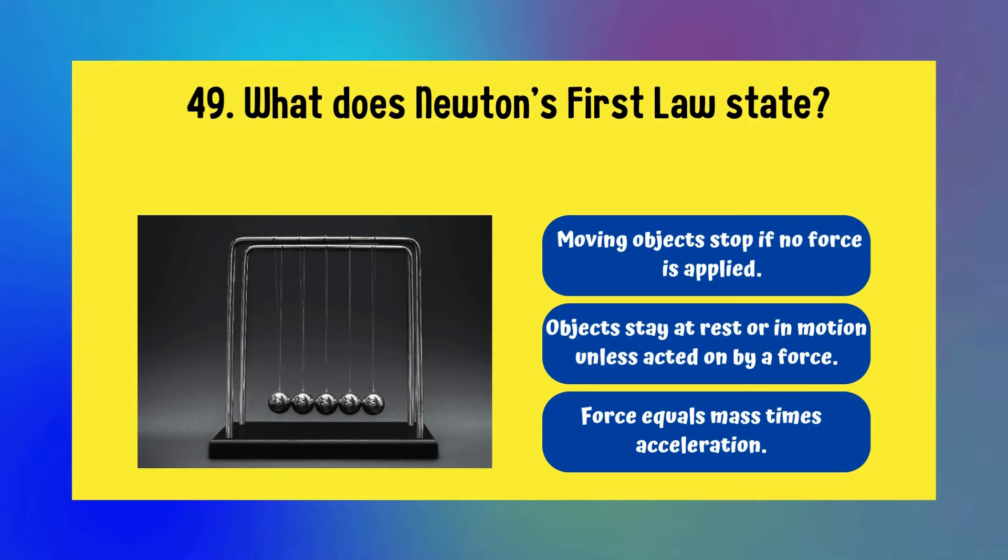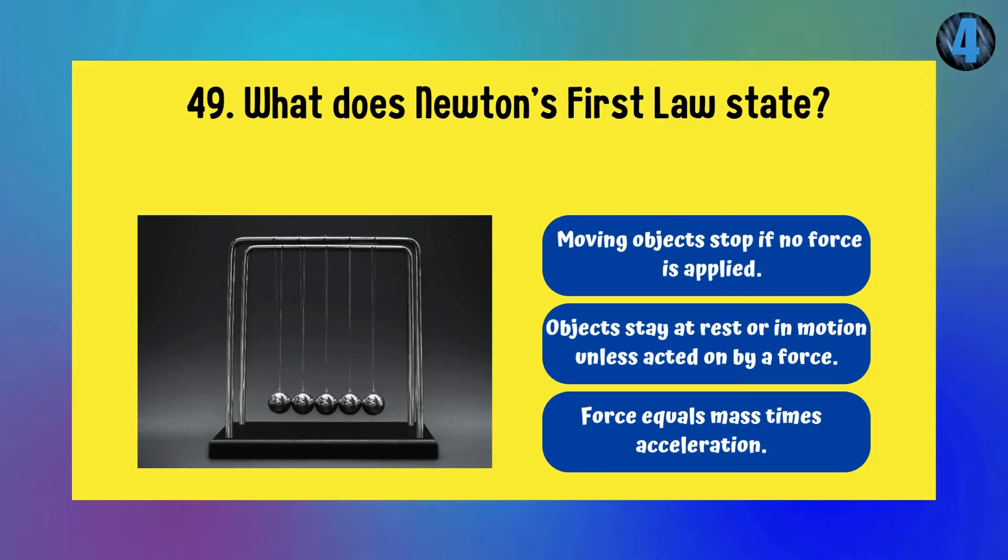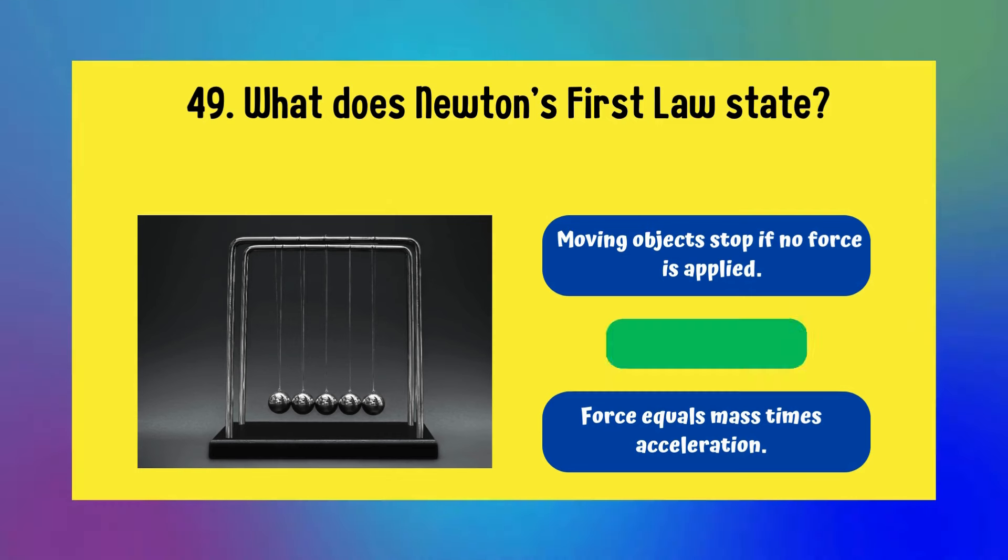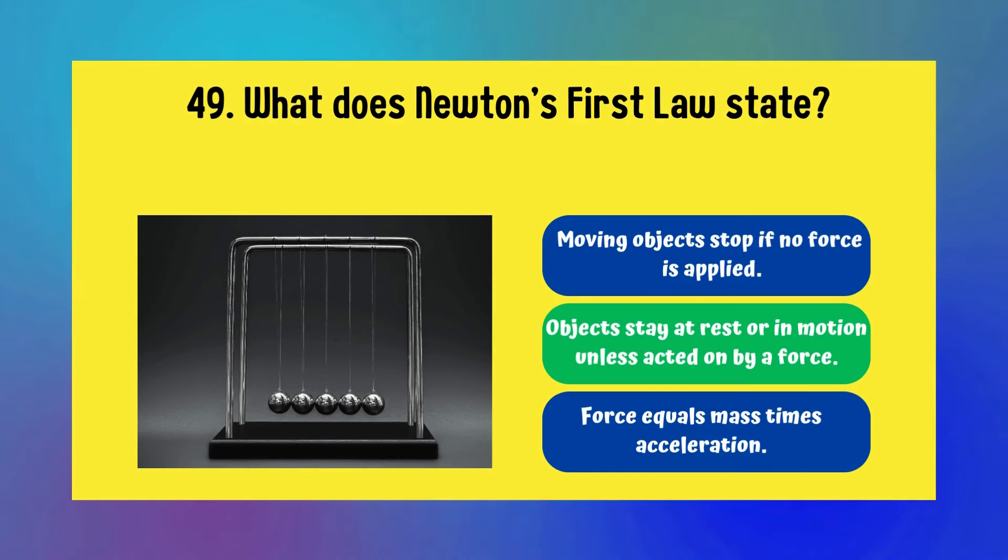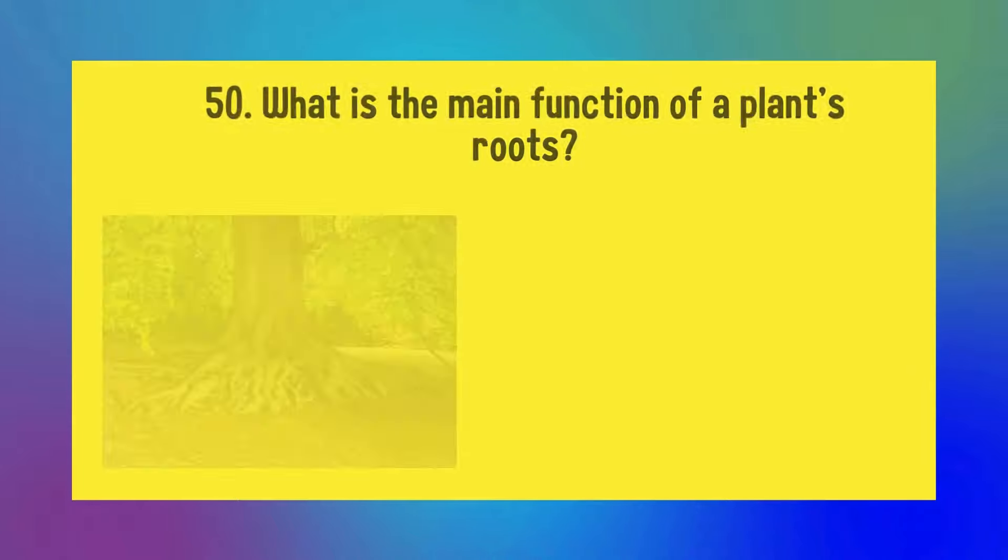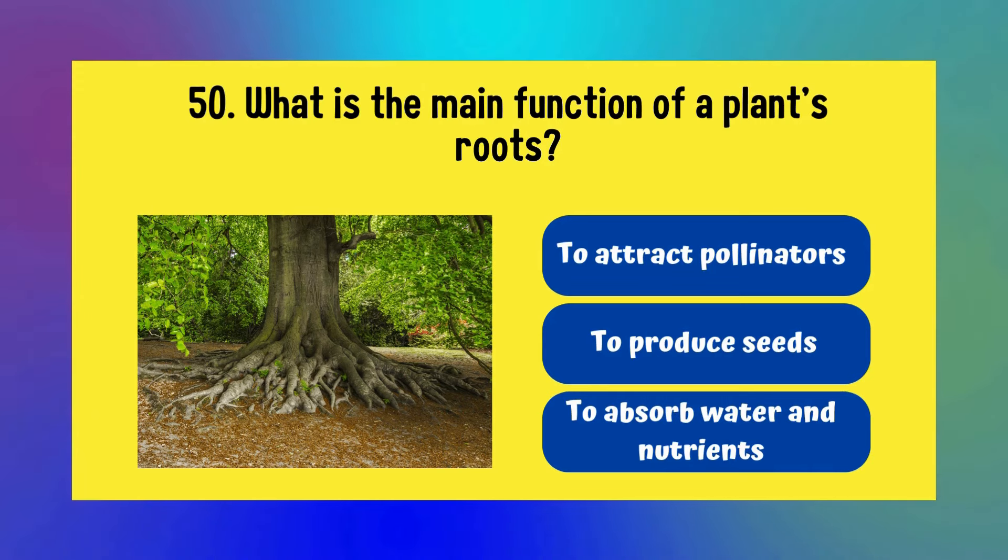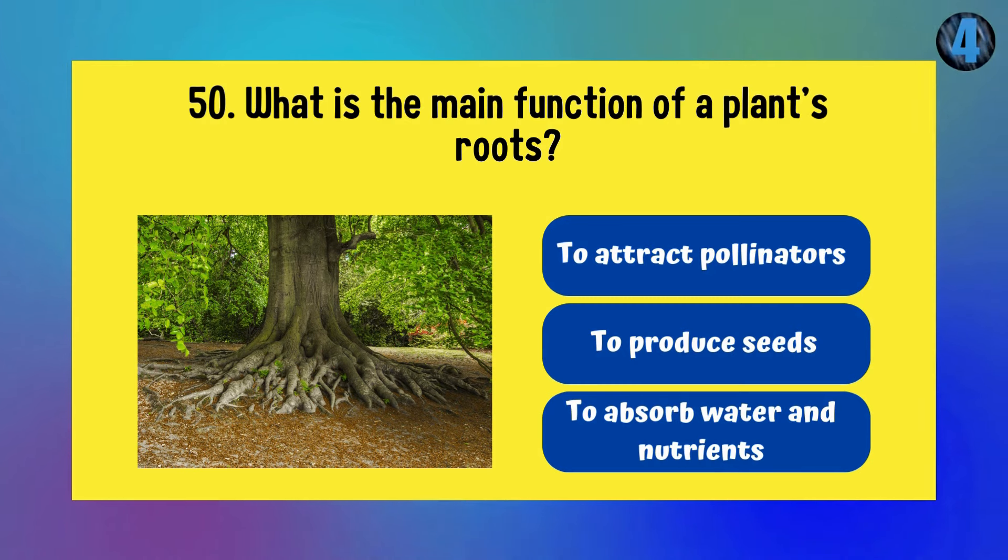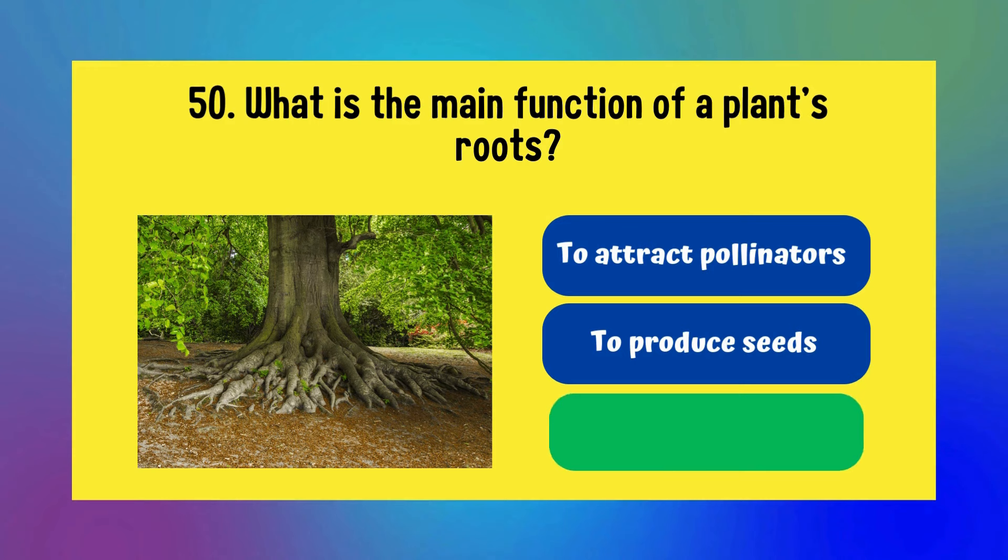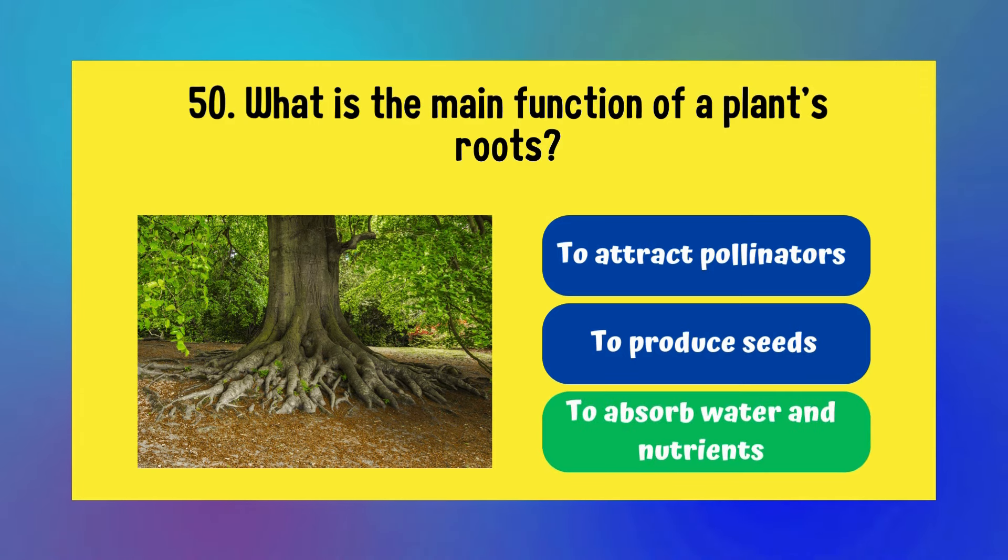What does Newton's first law state? Option A: moving objects stop if no force is applied. Option B: objects stay at rest or in motion unless acted on by a force. Option C: force equals mass times acceleration. The correct answer is objects stay at rest or in motion unless acted on by a force. What is the main function of a plant's roots? To attract pollinators, to produce seeds, or to absorb water and nutrients? It is to absorb water and nutrients.